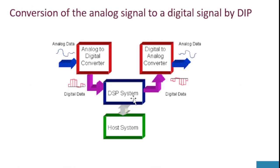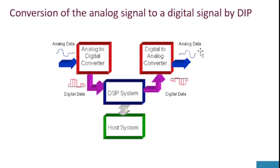Here we have a system that converts analog signals to digital signals and digital signals back to analog signals using DIP. For this system, we use a DSP system and converters. First, the analog signal is put into the converter, which converts it to a digital signal. The digital data then passes through the DSP system and enters another converter that converts it back to analog data. This is how we convert analog signals to digital signals using DIP.